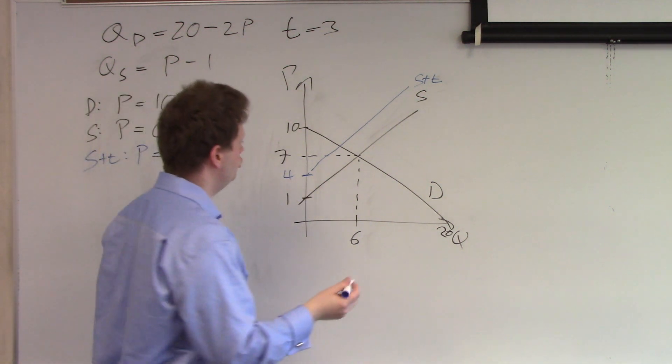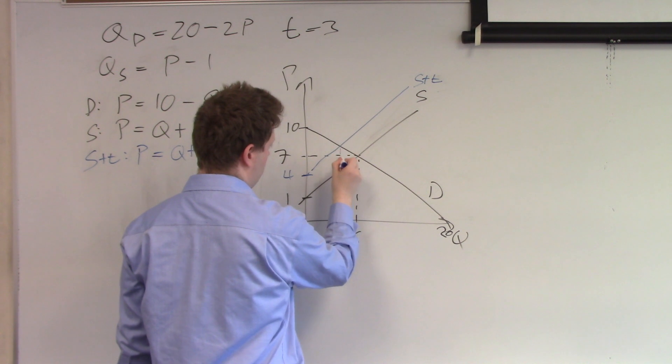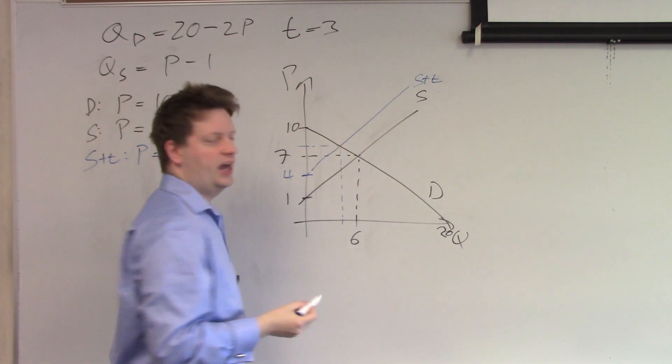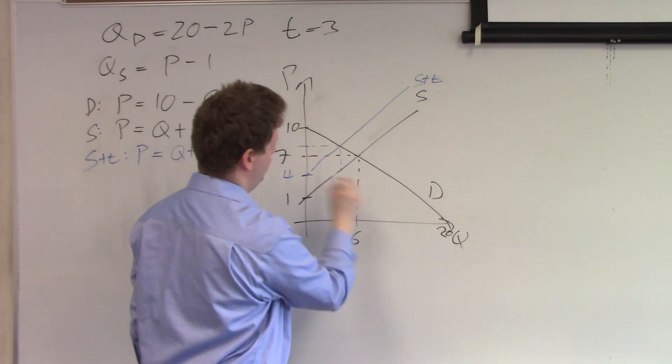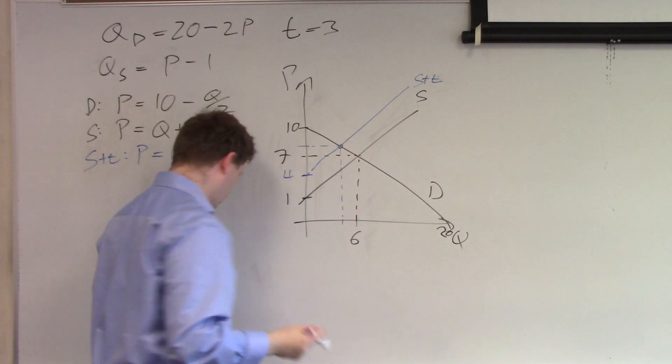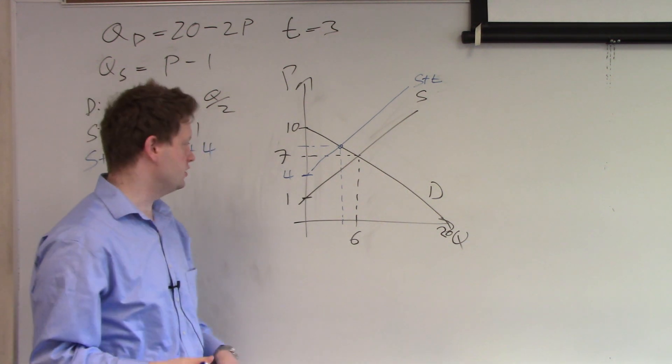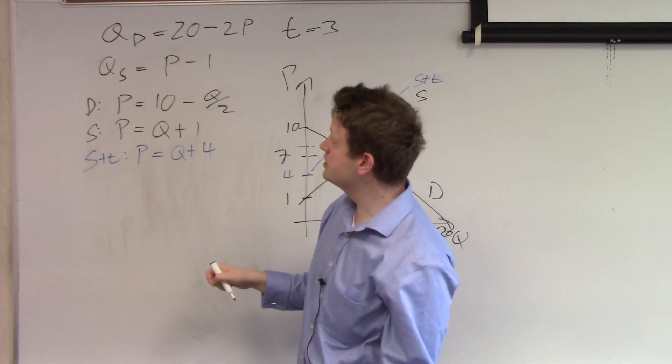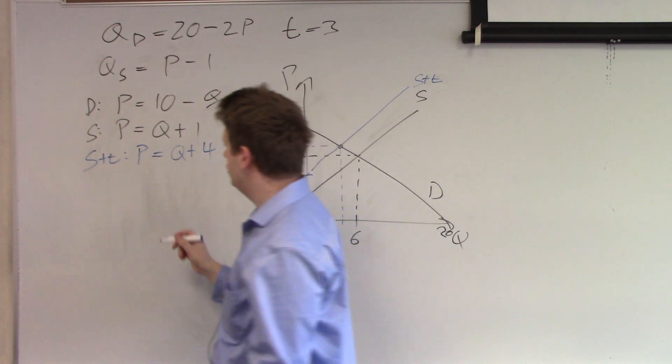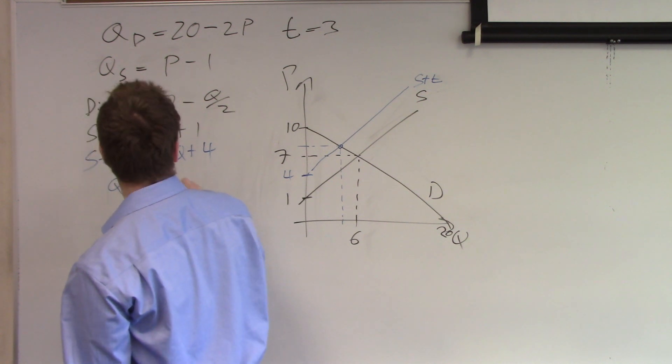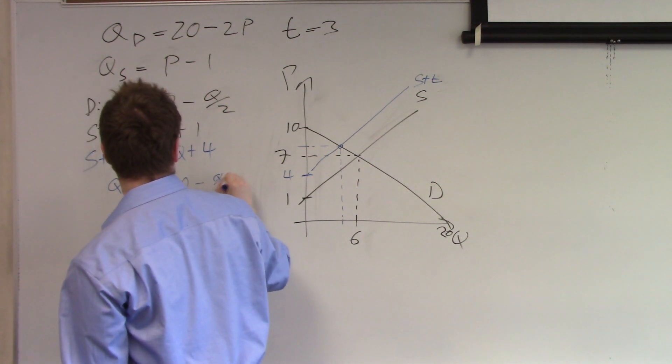This leads to a new point here where we have the demand intersecting with this new supply curve. Let's calculate this point because we will need it in the analysis later. Supply plus tax equal to demand. So we have Q plus 4 is equal to 10 minus Q over 2.